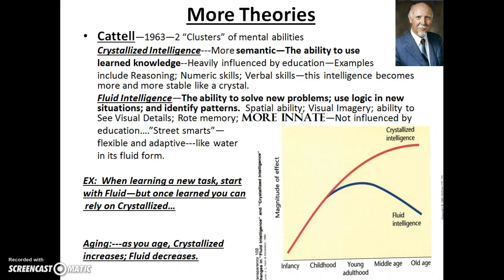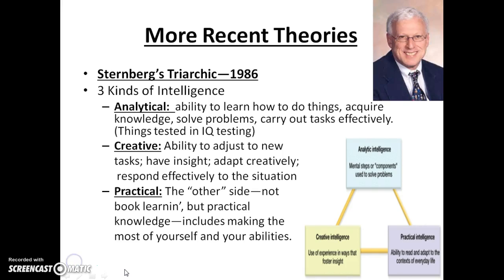As you age, crystallized intelligence seems to increase while fluid intelligence seems to decrease. From there, let's move on to Sternberg's triarchic theory from 1986.